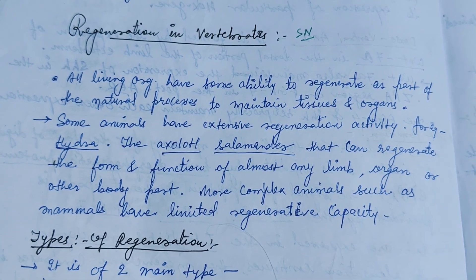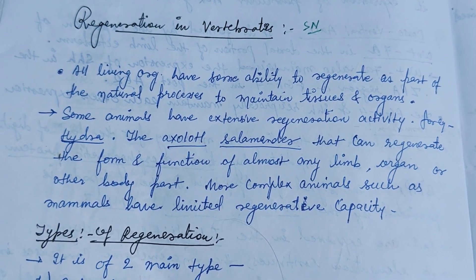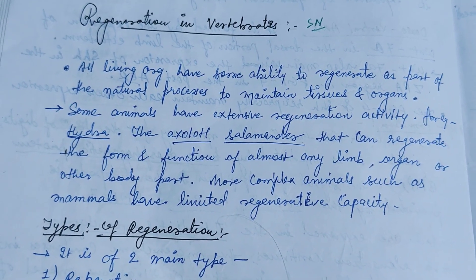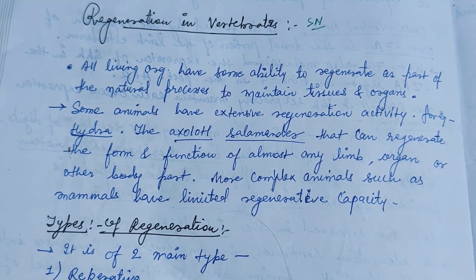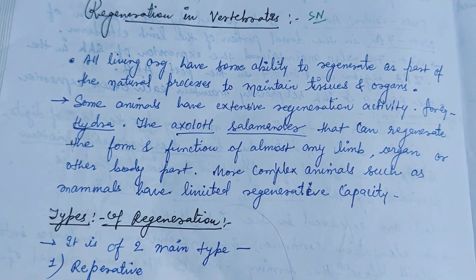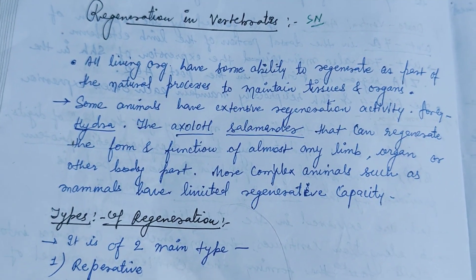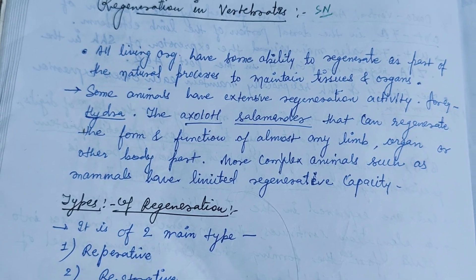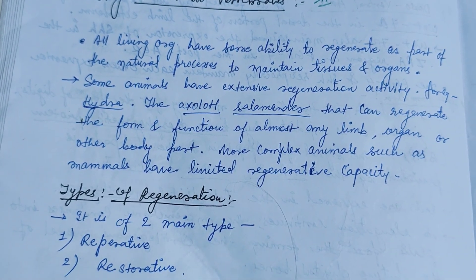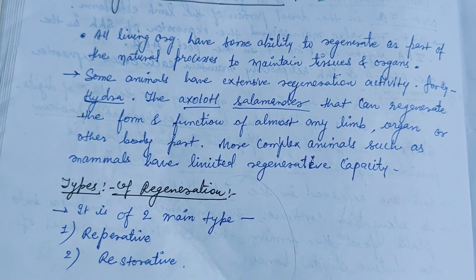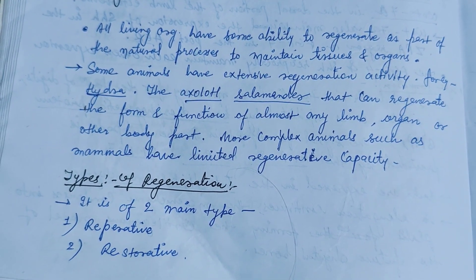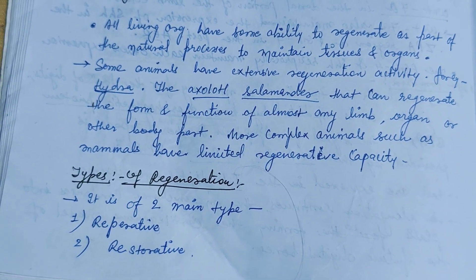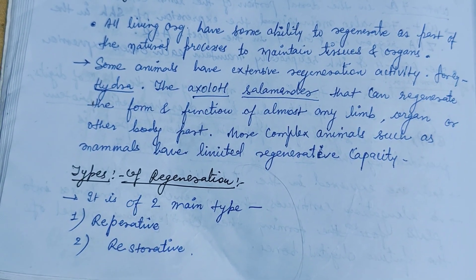Hi everyone, through this video we will see the regeneration in vertebrates, which may be asked in the examination in the form of short notes. All living organisms have the same ability to regenerate as part of the natural process to maintain tissues and organs. Types of regeneration may be of two types: repetitive and restorative.